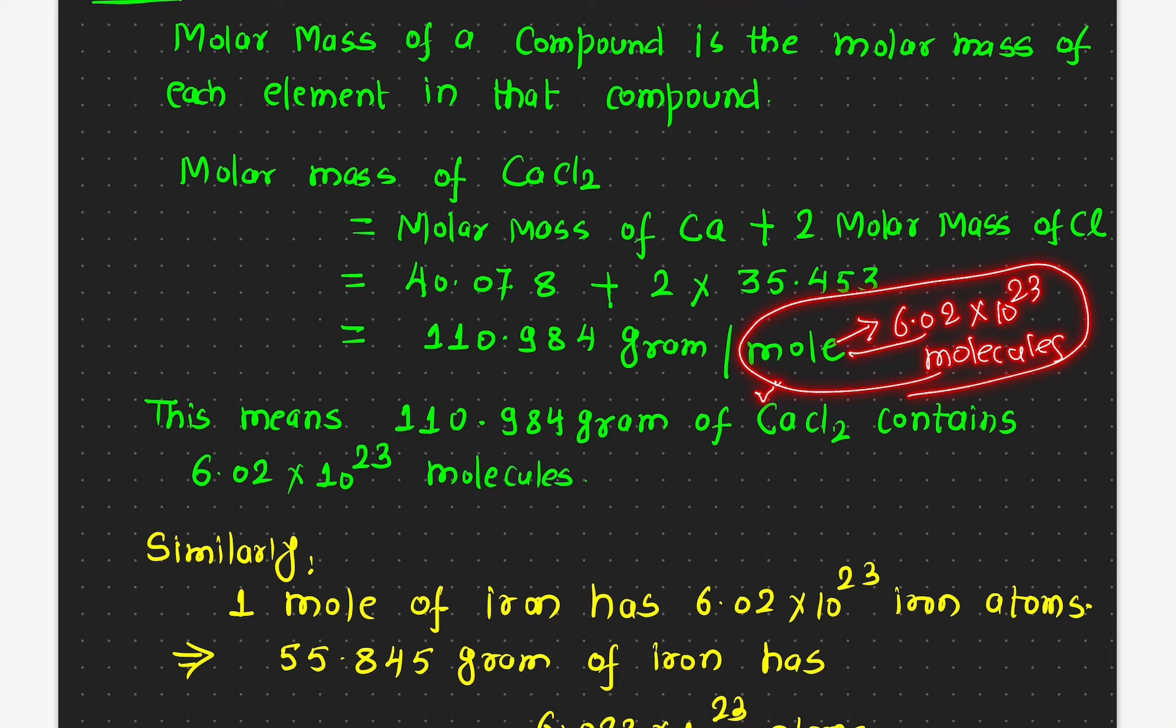One mole always represents this many molecules. So now if I take this many grams of calcium chloride, then the number of molecules will have 6.02 times 10 to the 23 molecules.